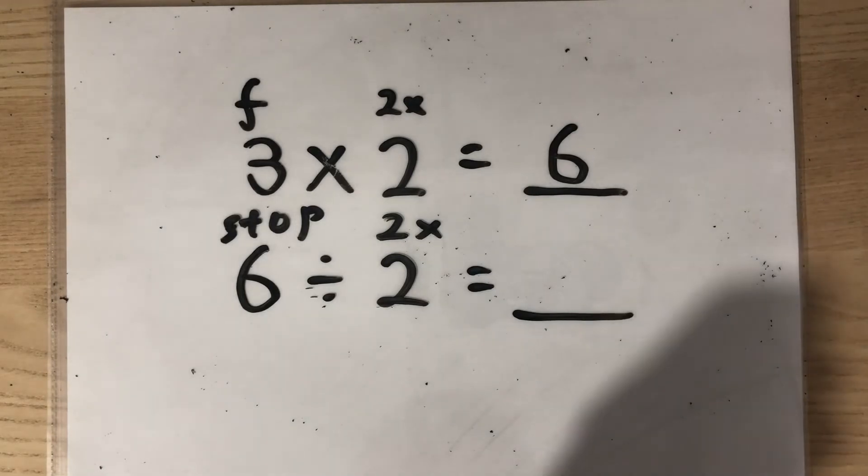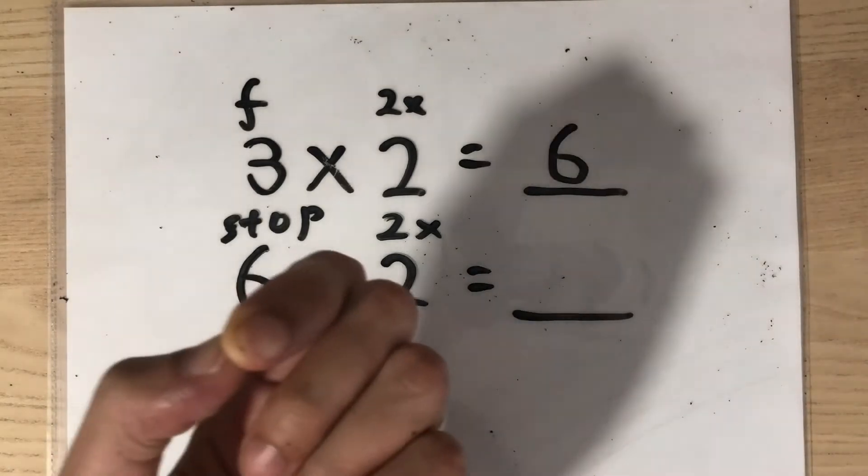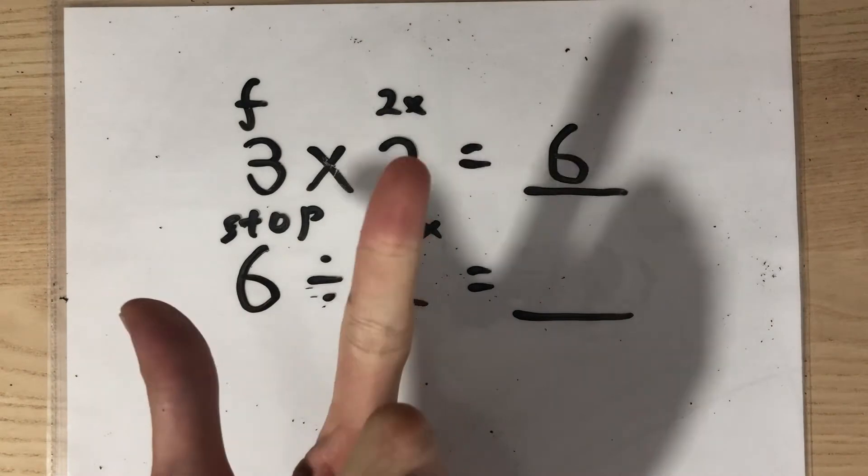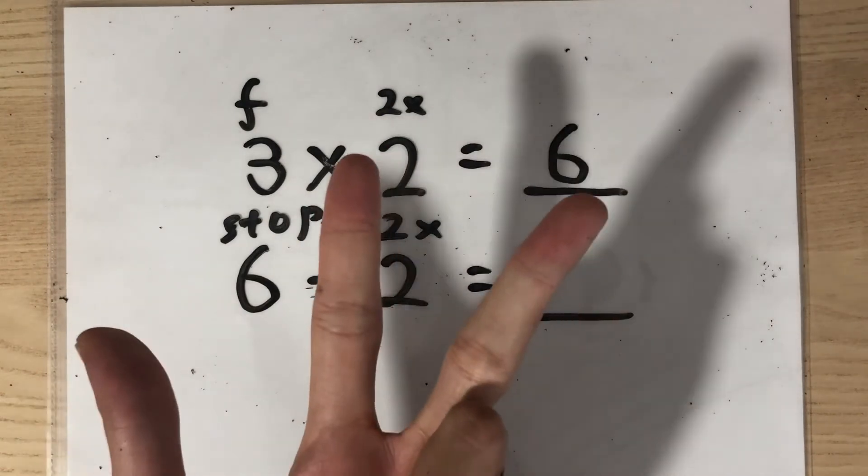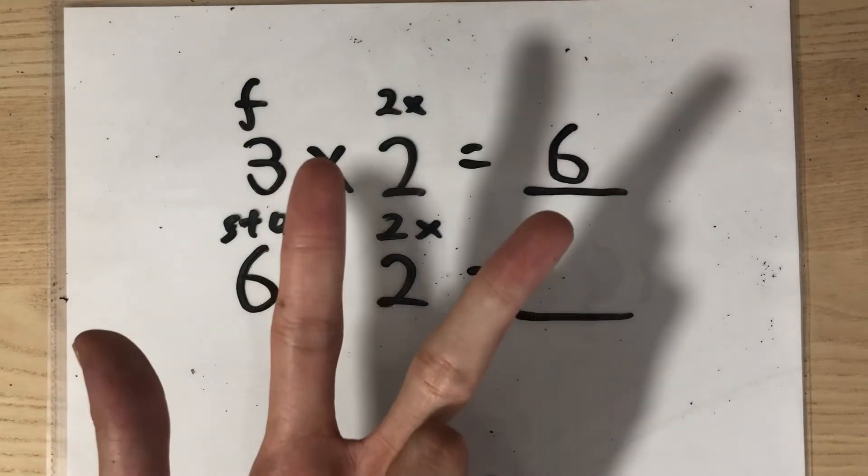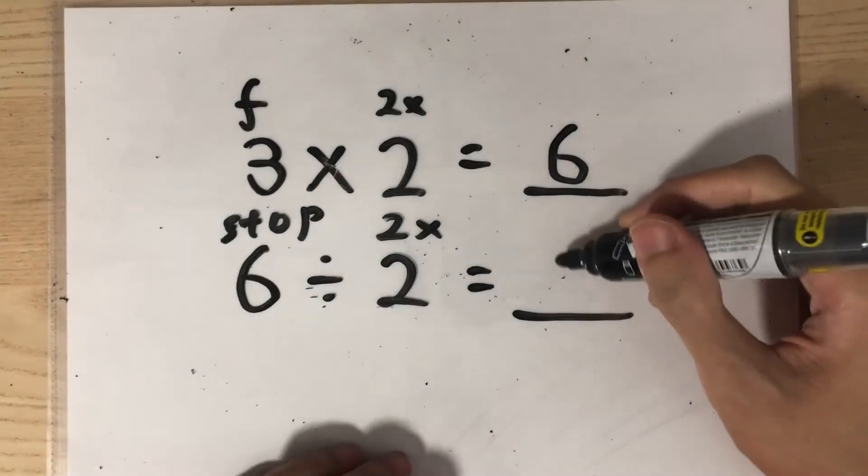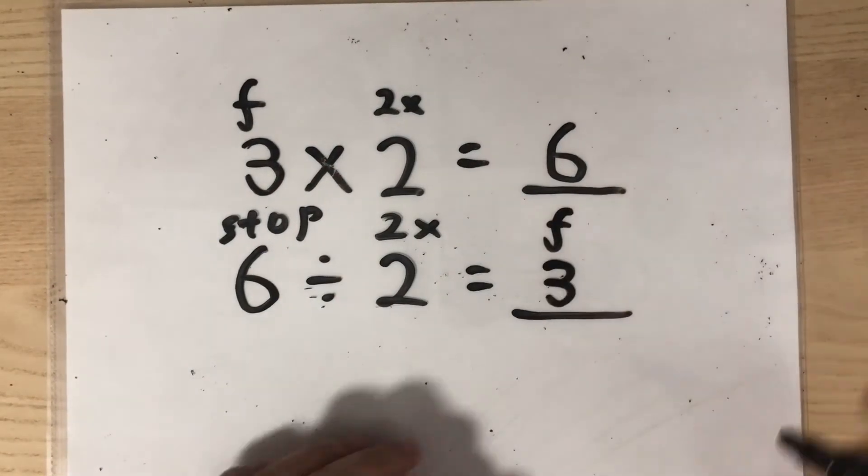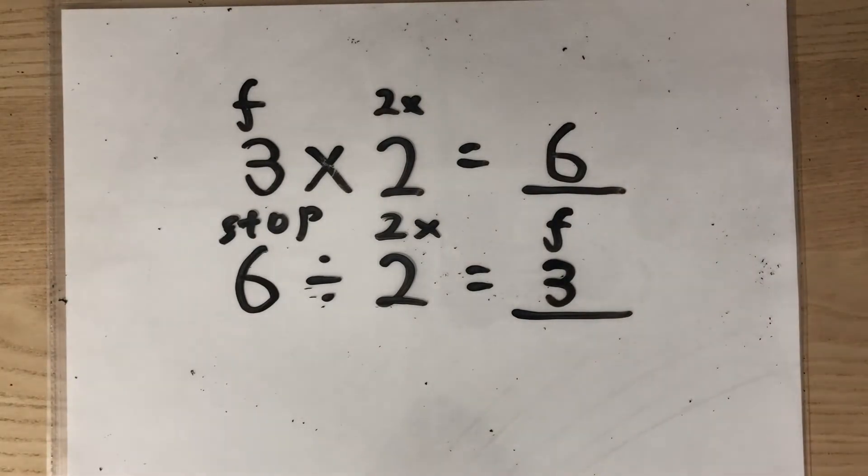So we'll do our 2 times table until we hear the number 6. Ready? Let's go. 2, 4, 6. We have heard 6. We stop and see how many fingers we are holding up. That is 3. So 3 fingers. We held up 3 fingers and that is the answer.